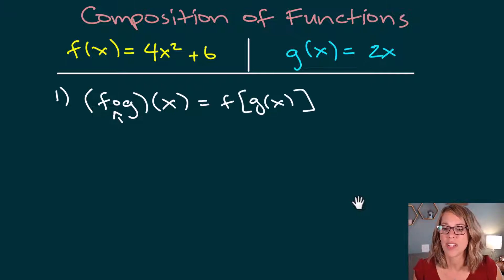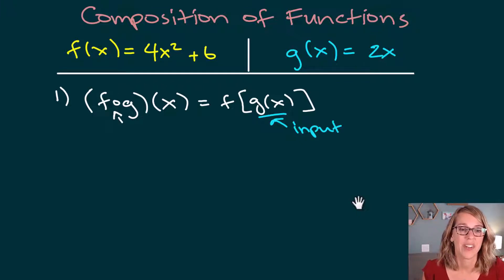So what we're doing is we're giving our function a brand new input, and that input happens to be g(x). So we need to apply the function f with g as the input. So what does our function f do? f takes 4 times whatever we give it, it squares it, and then it adds a 6.